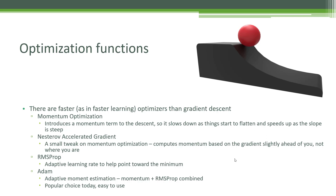There's also something called the Nesterov accelerated gradient, which is just a tweak on top of momentum optimization — basically it's looking ahead a little bit to the gradient in front of you to take that information into account, so that works even better. There's also something called RMSprop, which is just using an adaptive learning rate. That helps point you in the right direction toward the minimum. Finally, there's something called Adam — adaptive moment estimation — basically it's the momentum optimizer and RMSprop combined, giving you the best of both worlds. That is a popular choice today because it works really well and it's very easy to use.